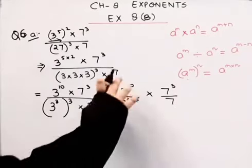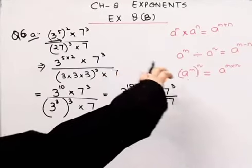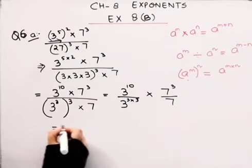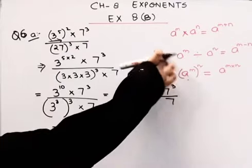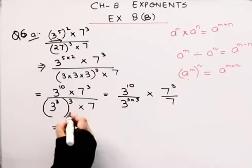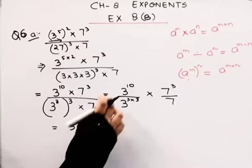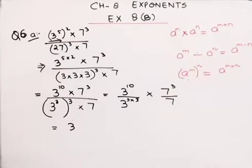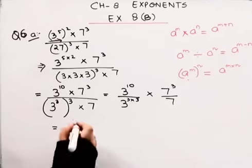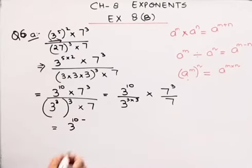Okay, what have I done? I just took the same bases together, separated the same bases. Right? Now which law will I apply? I'll apply the second law. Okay, so what's in the second law? When we have two numbers with same base, different powers, and there's a division sign, what happens? We keep the base and we subtract the powers.